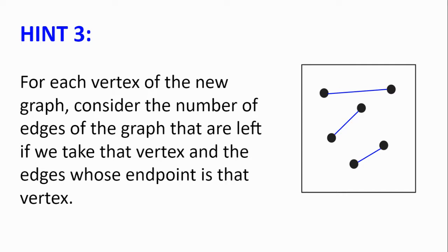Hint number 3. For each vertex of the new graph, consider the number of edges of the graph that are left if we take that vertex and the edges whose endpoint is that vertex. So for this vertex here, we would take that vertex and the edge, and the number would be 2, because there are two remaining edges. Which two things can you say about these numbers?